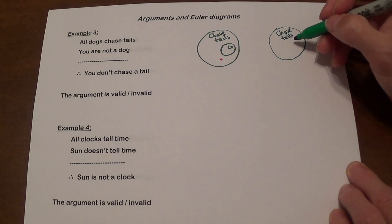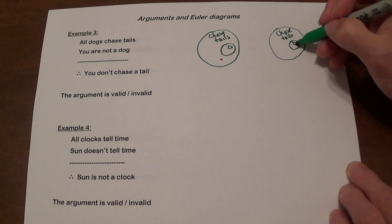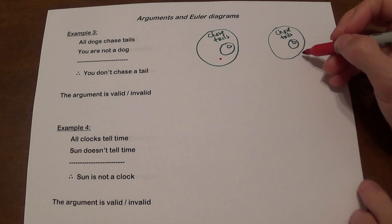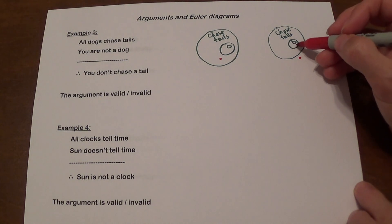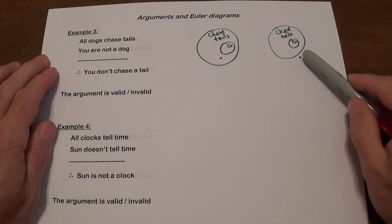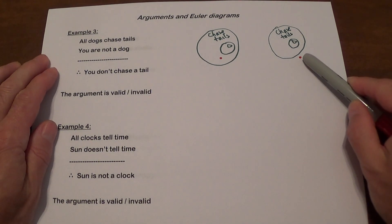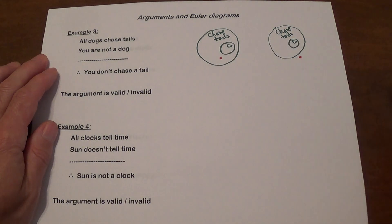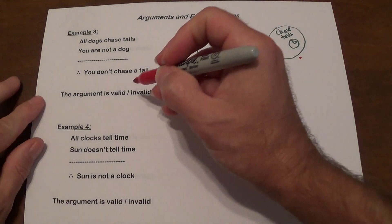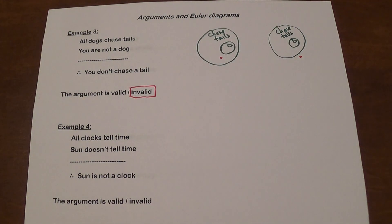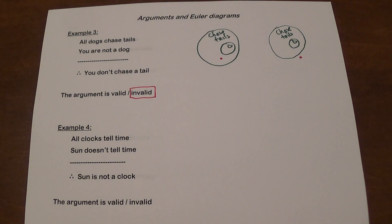Another possibility: you have beings that chase tails with dogs inside, but since you're not a dog, the point representing you does not have to lie inside the tail chasers circle — it could lie outside, meaning you are not a tail chaser. Since you have a possibility that you are or you're not, this argument is invalid.